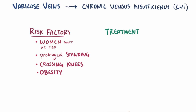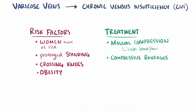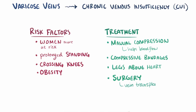Treatment options for varicose veins and CVI might involve manual compression to help increase blood flow, as well as compressive bandages and stockings, and frequent periods of elevating the legs above the heart. Besides these more conservative options, there are various surgical treatments that can help cure the disease, like a vein transplant, a vein repair, or a vein removal.